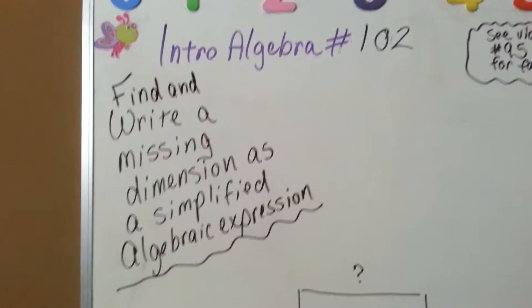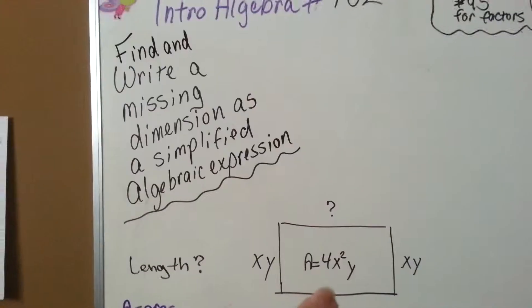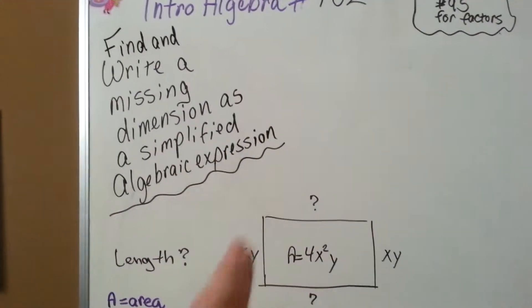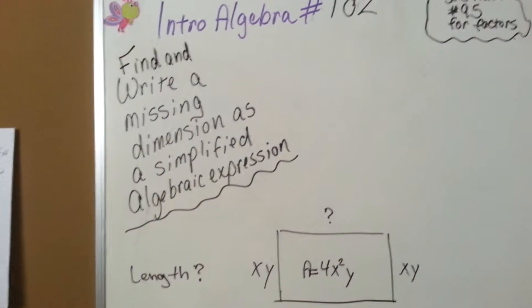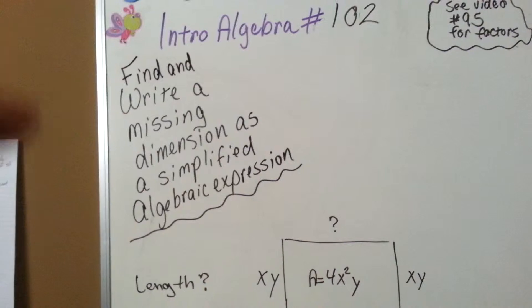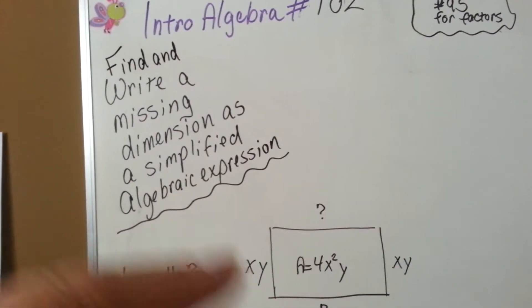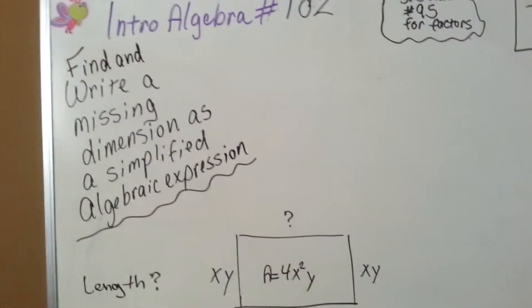This video has a very long title. Basically what it is, is you have a box or a rhombus or a square, rectangle, whatever, and you've got a missing dimension. So we need to write and find the missing dimension. We're going to write it as a simplified algebraic expression.